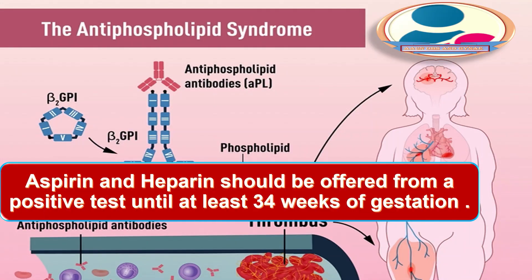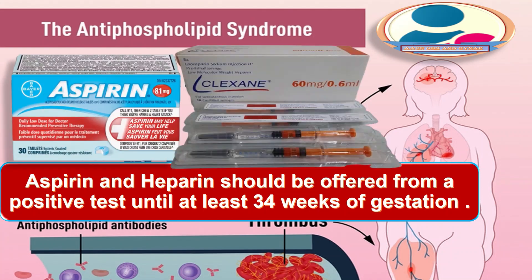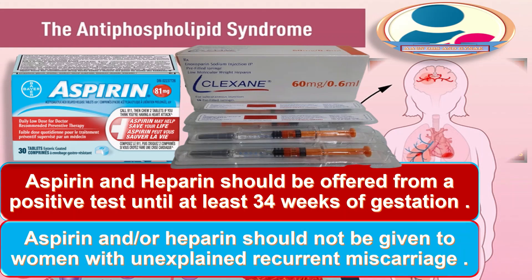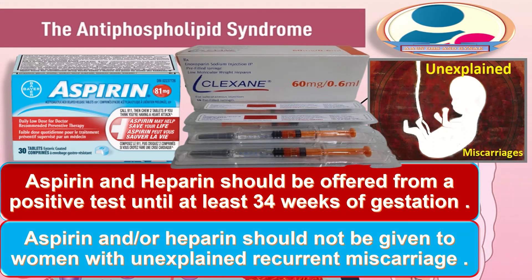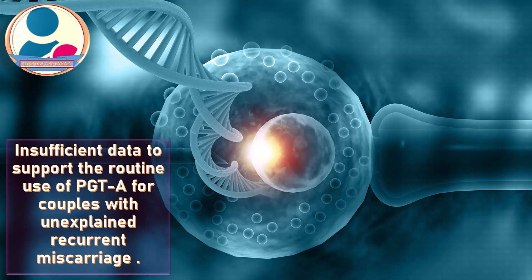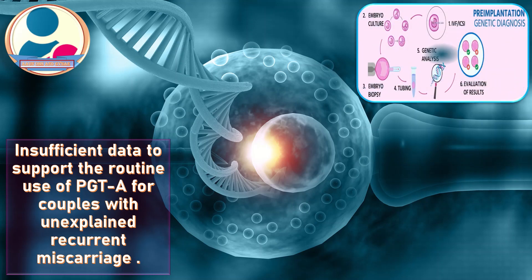For women diagnosed with antiphospholipid syndrome, aspirin and heparin should be offered from a positive pregnancy test until at least 34 weeks of gestation, following discussion of potential benefits versus risks. Aspirin or heparin should not be given to women with unexplained recurrent miscarriages. There is currently insufficient data to support the routine use of preimplantation genetic testing for aneuploidy (PGT-A) for couples with unexplained recurrent miscarriages, while treatment may carry significant cost and potential risk.